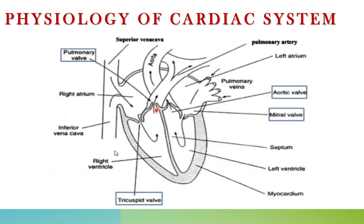The third valve is the pulmonary valve, located in the right ventricle. The function of the pulmonary valve is to help the right ventricle pump blood to the pulmonary artery.